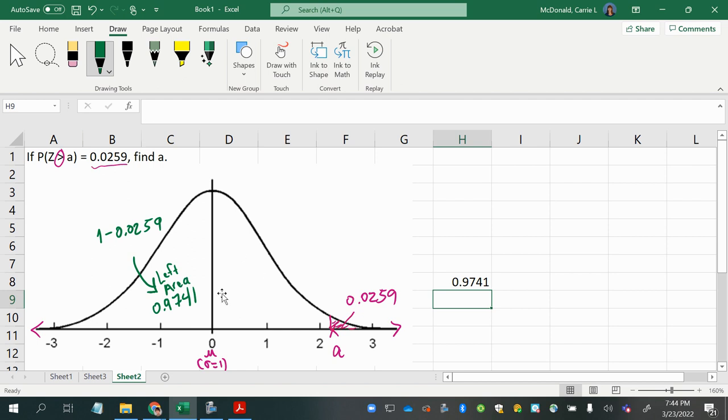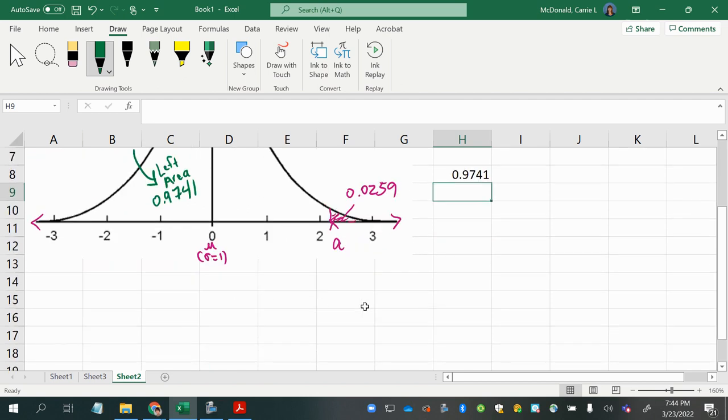All right, now the reason I need a left area is so that I can use it to find this answer here, the A value, which is a Z score. So A, which is a Z score, is going to be found using norm.inverse with my left area probability and the mean of 0 and the standard deviation of 1.